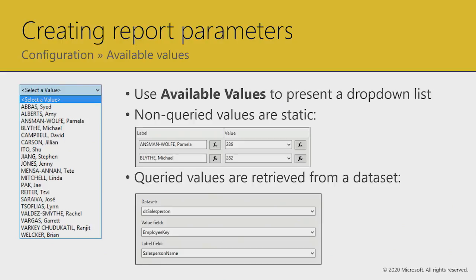Here's an example of a report parameter configured with available values. If you don't configure available values, you just get a text box — enter the text, enter the number, or for a date you get a date picker. To provide a list of options — like a dropdown showing salespeople — you configure the available values for the report parameter. The source of available values can come from a static set of data or another dataset defined in the report.